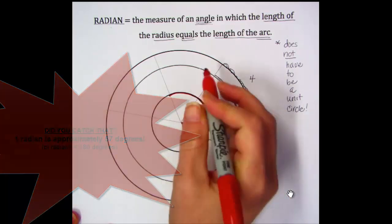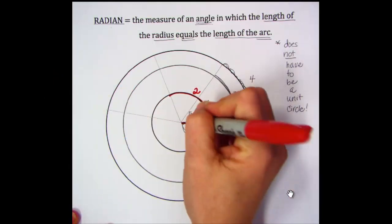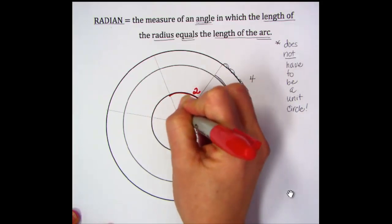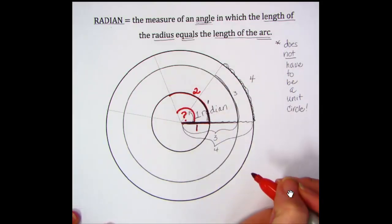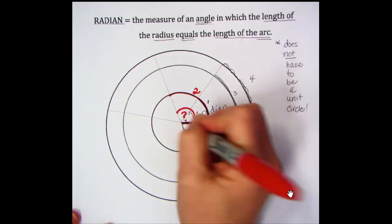Here I'm taking a red Sharpie and doing something a little different. I want to measure that next angle. I have a radius of one and an arc of two.